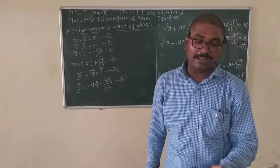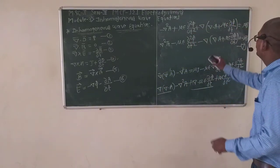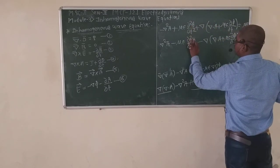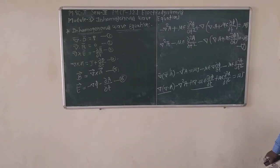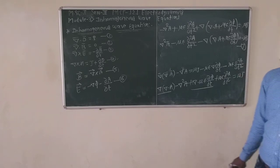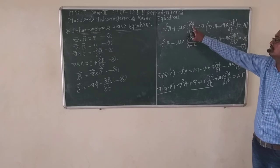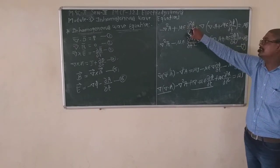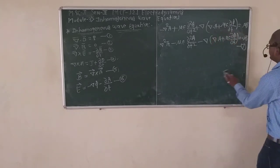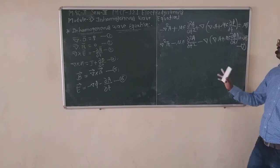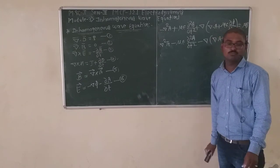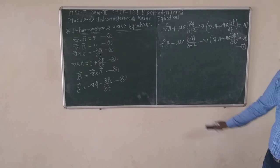Equation 7 is: del squared A minus mu*epsilon*(d²A/dt²) minus del(del dot A plus mu*epsilon*(d phi/dt)) equals minus mu*J. This is equation 7, which is the first inhomogeneous wave equation in terms of the magnetic vector potential A.